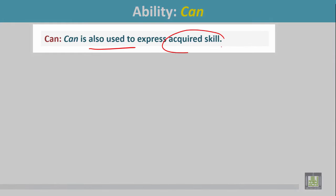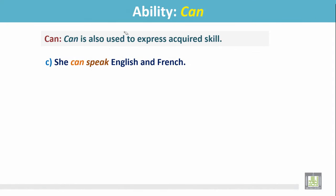Examples: She can speak English and French. She acquired this knowledge of speaking in both languages. Can is also used to express possibility.